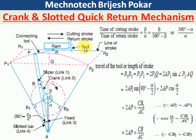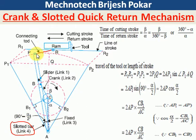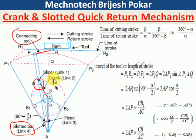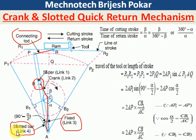The tool is connected with the ram, and the ram is connected with the slotted bar through a connecting rod. Inside the slotted bar there is a slider which slides inside the bar and is also connected with the crank to the fixed link. CA is the fixed link (link 2 is the crank), the slider is link 1, and the slotted bar is link 4.